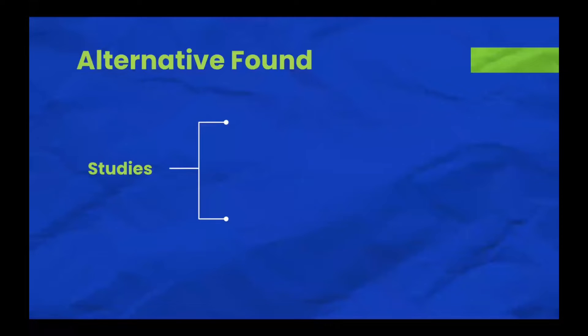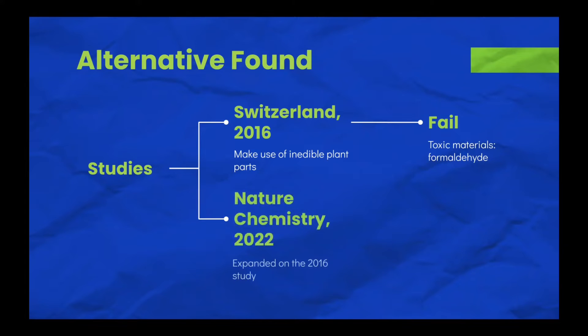That is, until a study in 2016 conducted in Switzerland inspired a new breakthrough into solving the issue of plastic pollution. The 2016 study discovered how to make use of the inedible parts of plants to make plastic. However, their attempts failed as their process requires formaldehyde, an organic compound known for its toxic and carcinogenic effects.